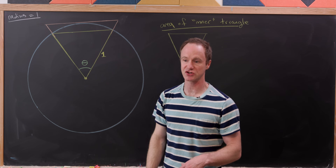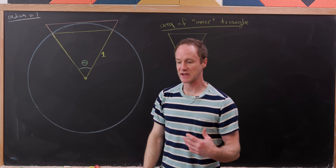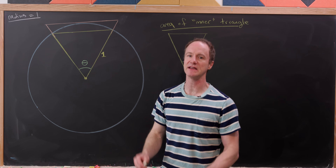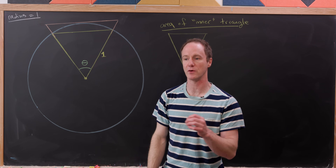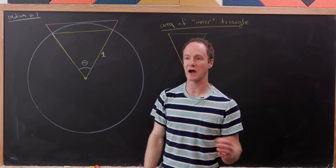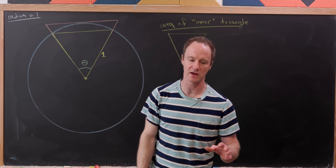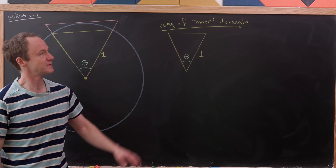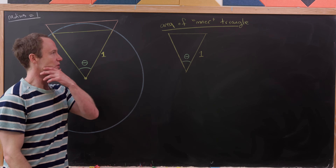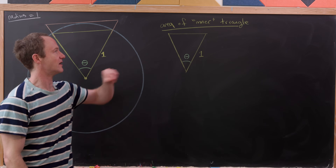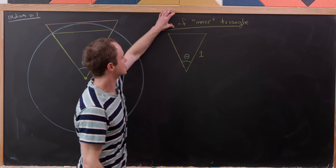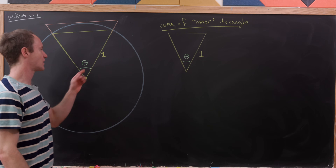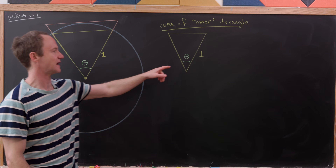The area of each of these triangles can be used to pretty easily calculate the area of both the inscribed regular polygon and the circumscribed regular polygon. So let's start with the area of the inner triangle. I've transposed it over here and called this angle theta.